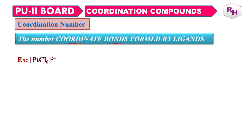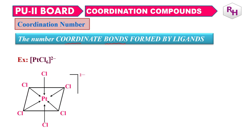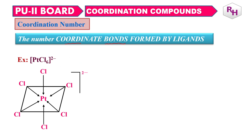Let us take one example where PtCl6 2- is given. Platinum will have the octahedral structure. It is very clear that chlorine is forming 6 bonds — 6 chlorines are there, 6 bonds are there. So we can easily tell that the number of coordinate bonds formed in this complex is 6. Now, from the last class, remember monodentate, bidentate, and tridentate ligands. If it is a monodentate ligand, the number of ligands is equal to the coordination number.